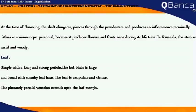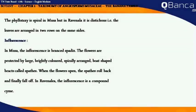Leaves: Simple with a long and strong petiole. The leaf blade is large and broad with a sheathy leaf base. The leaf is exstipulate and obtuse. The pinnately parallel venation extends up to the leaf margin. The phyllotaxy is spiral in Musa, but in Ravenala it is distichous — that is, leaves are arranged in two rows on the same side.